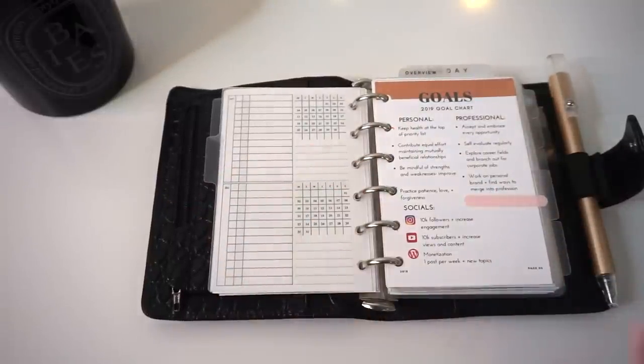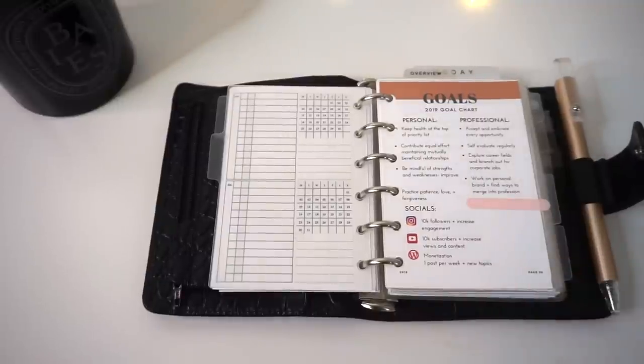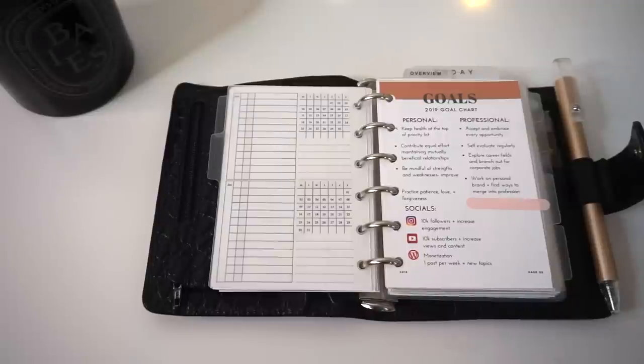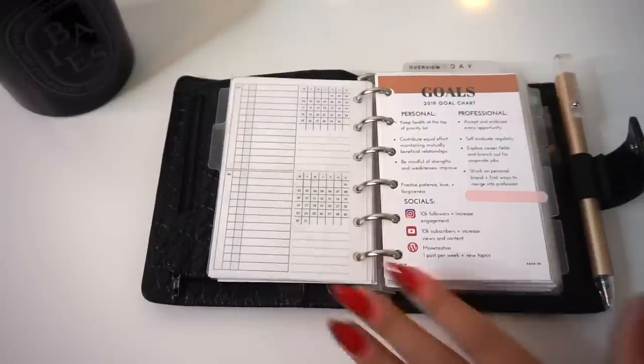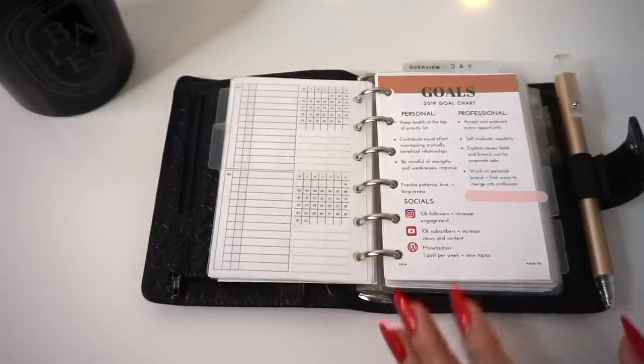Then my next section is really not done at all. I just have a goal sheet and I do want to have a whole section dedicated to goals and what I want to accomplish in 2019. I'm really excited to kind of work on that a little bit and create some more inserts for myself. This is just basically my outline of goals that I want to keep in mind, and then from there I'm going to break them down even further.